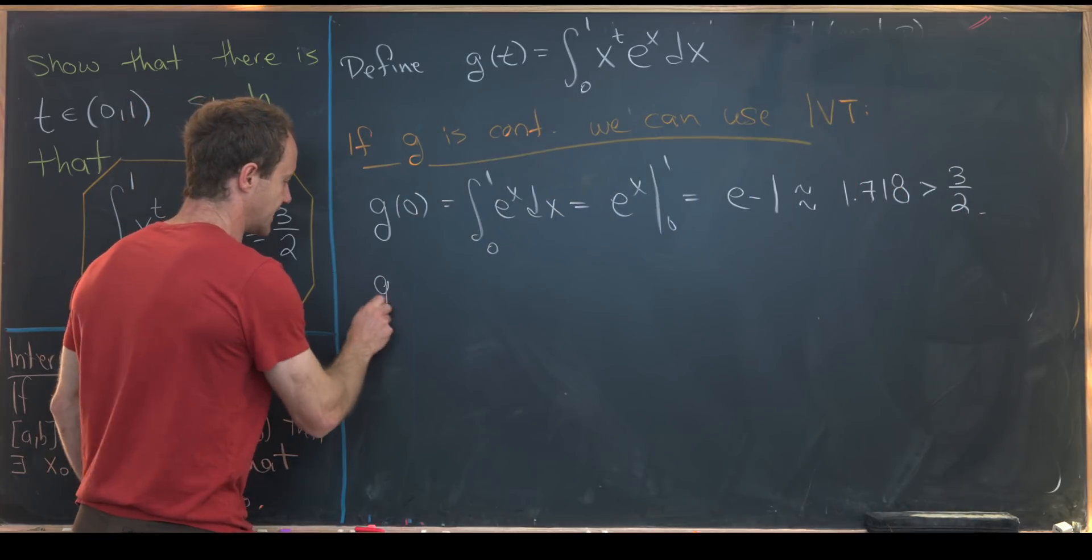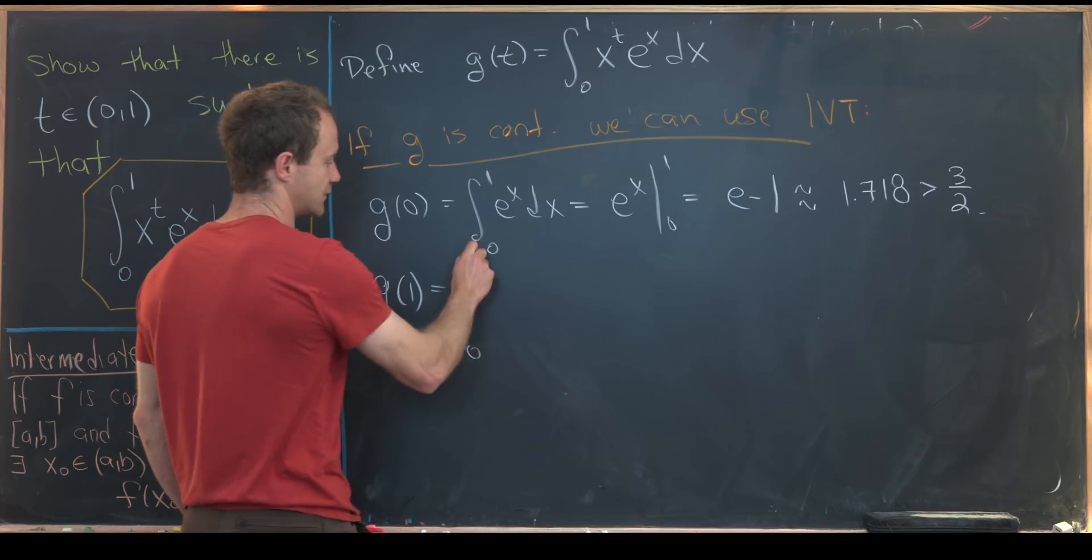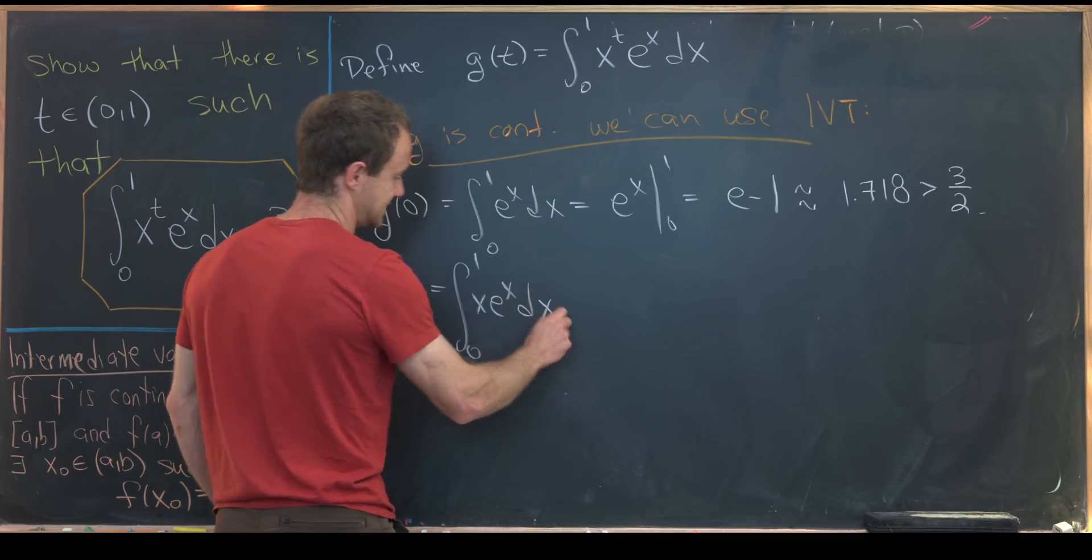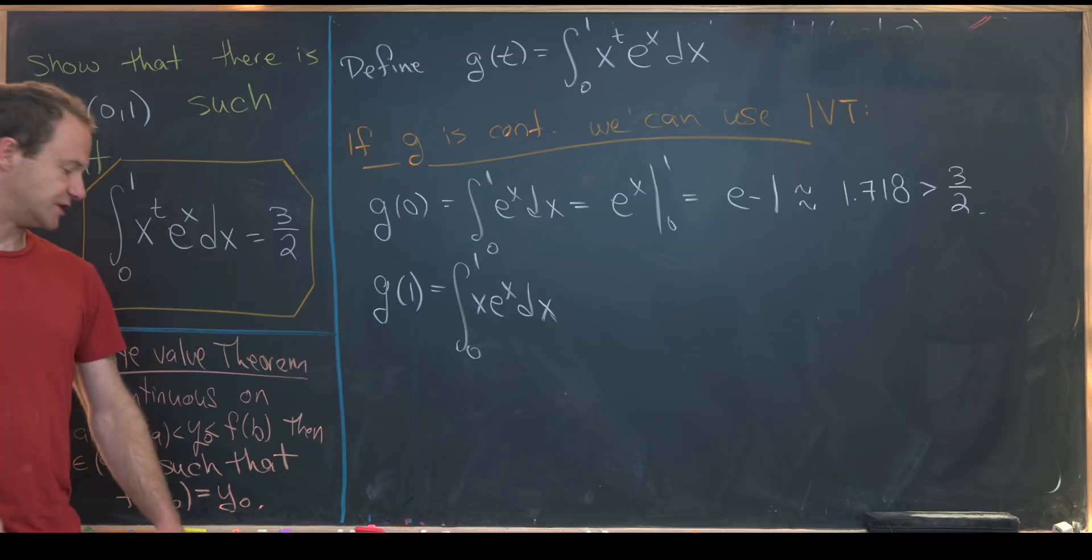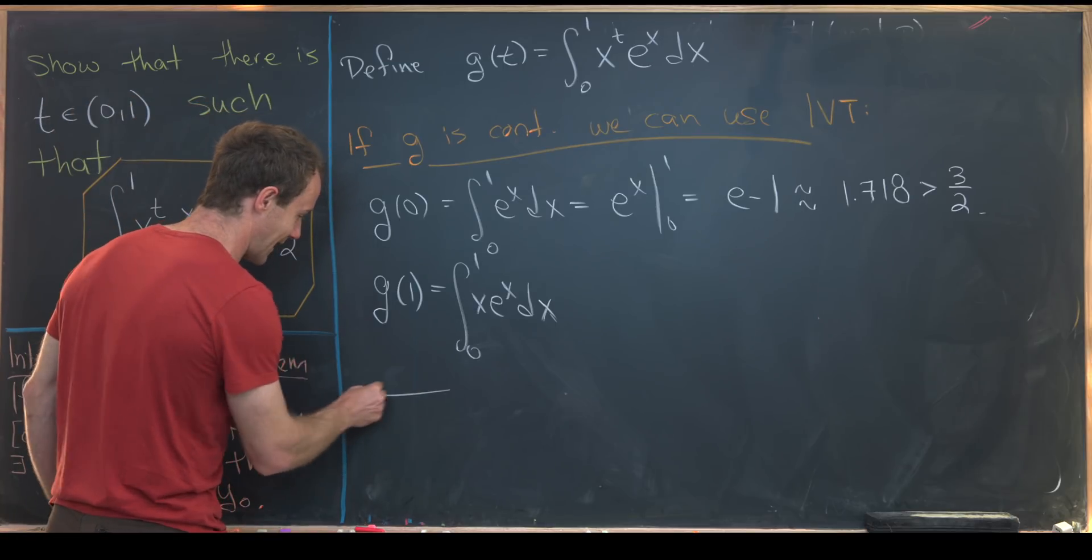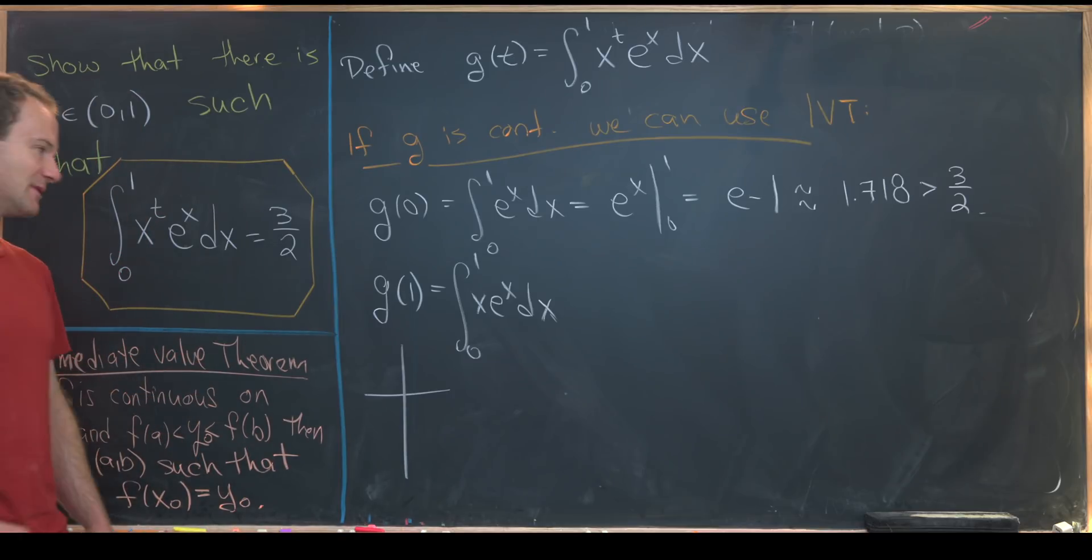Now let's also calculate g evaluated at one. That'll be the integral from zero to one of x times e to the x dx. Now here we probably want to use integration by parts or maybe the di method or tabular integration. You know, as black pen, red pen calls it the di method, I guess.